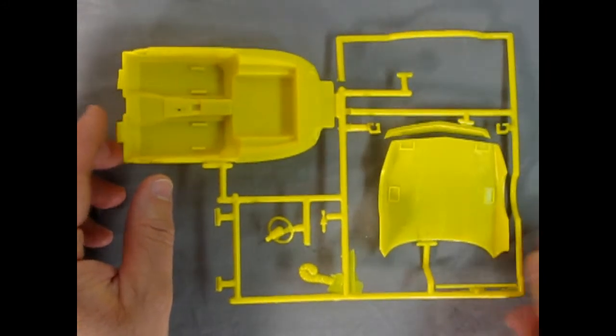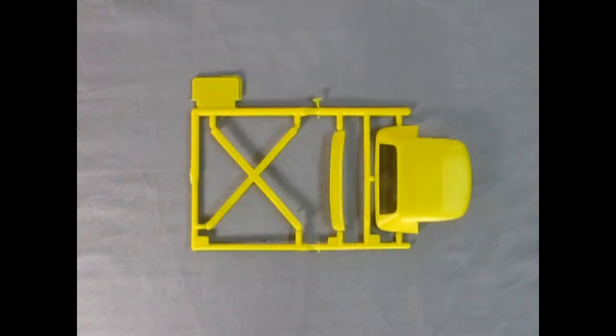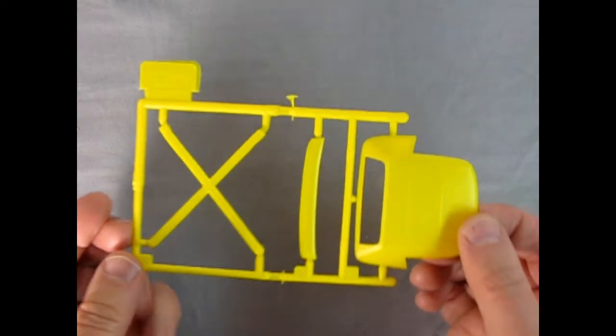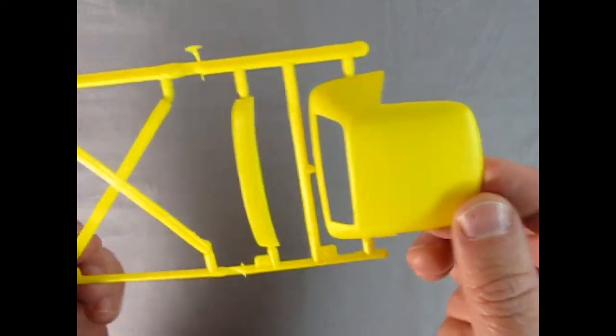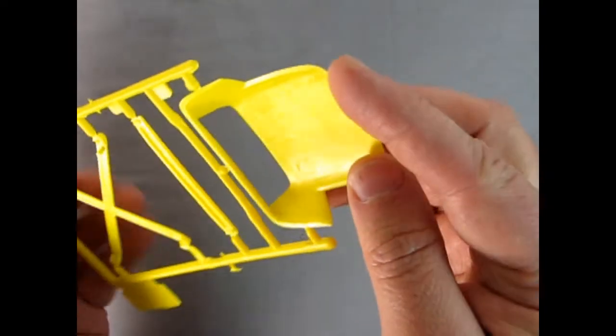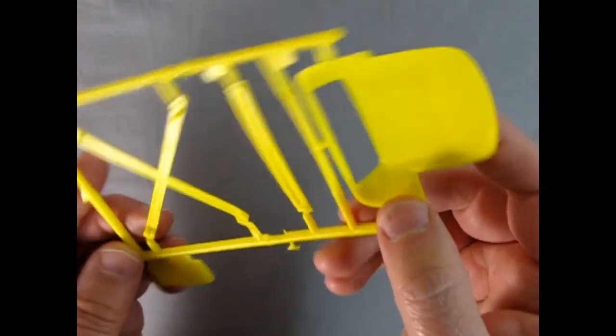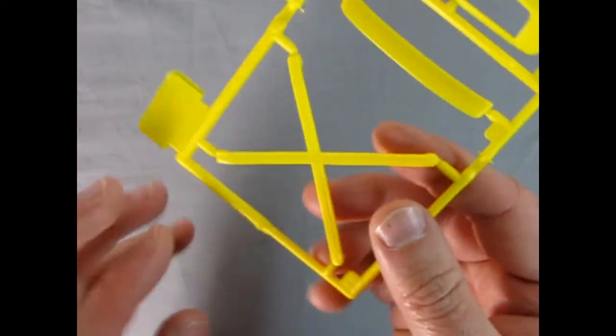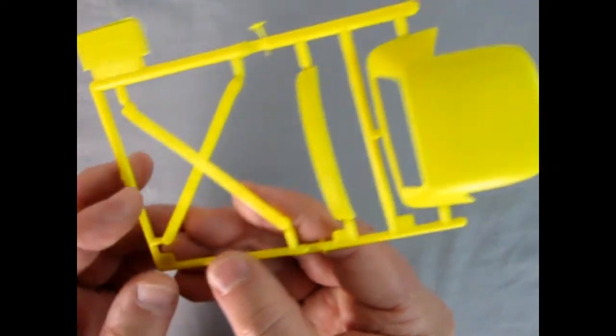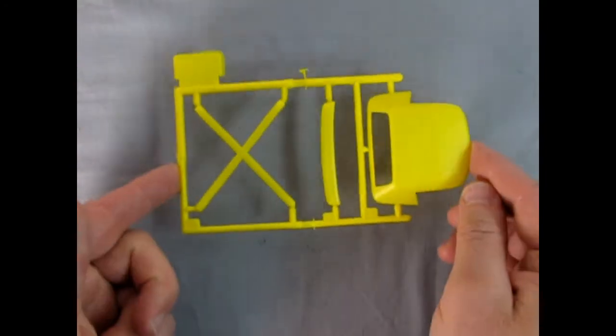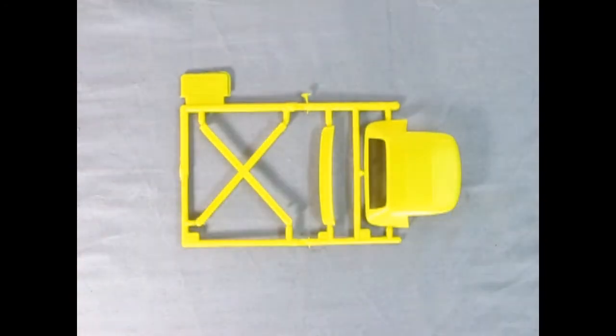In these three pieces we have our cross brace, which is needed on our convertible just to beef up the body considering there's no roof to strengthen it. We also have our rear spoiler and our convertible top. Let's take a look at what these are up close. As you can see, the convertible top is quite nice. There are some sink marks up underneath, and the X frame actually looks like the correct Corvette X frame. Very nicely done by MPC.